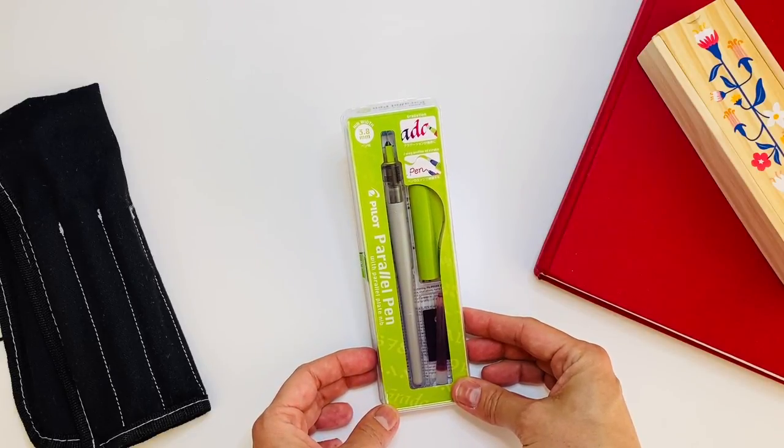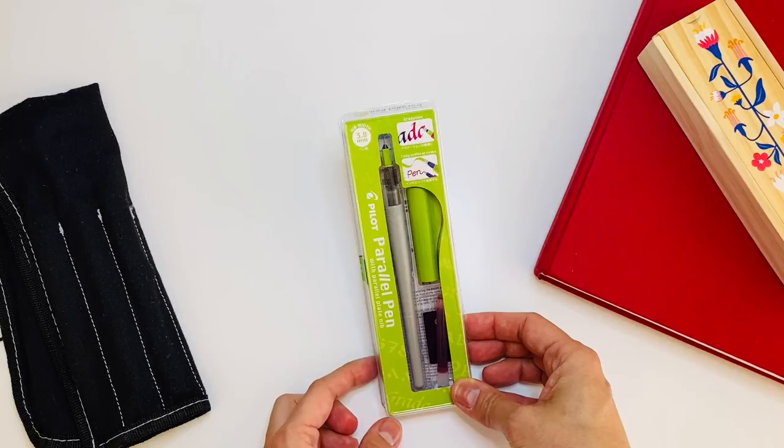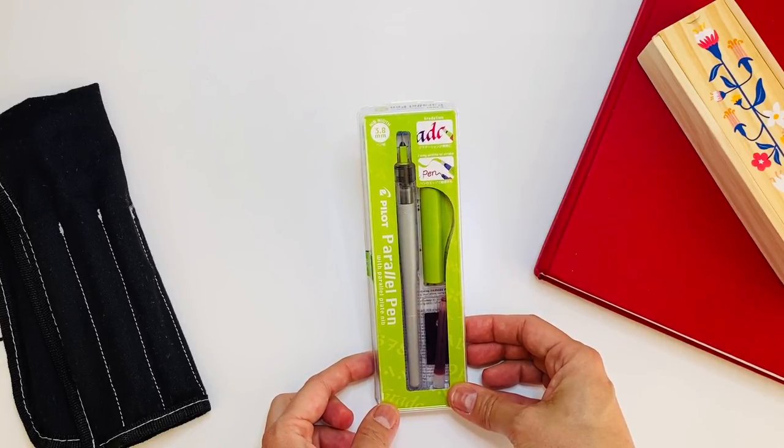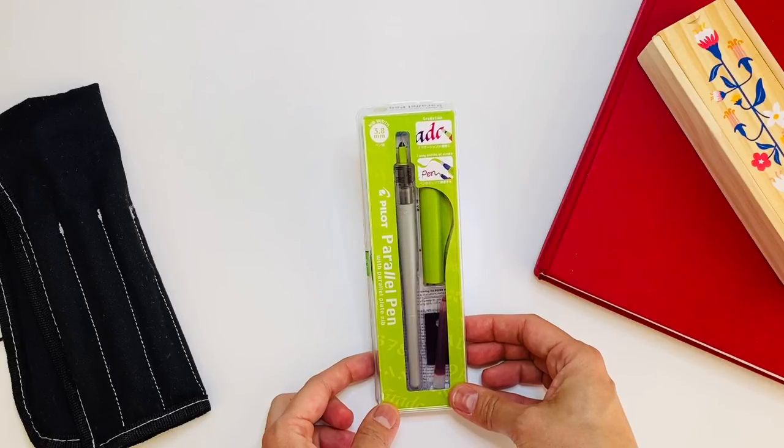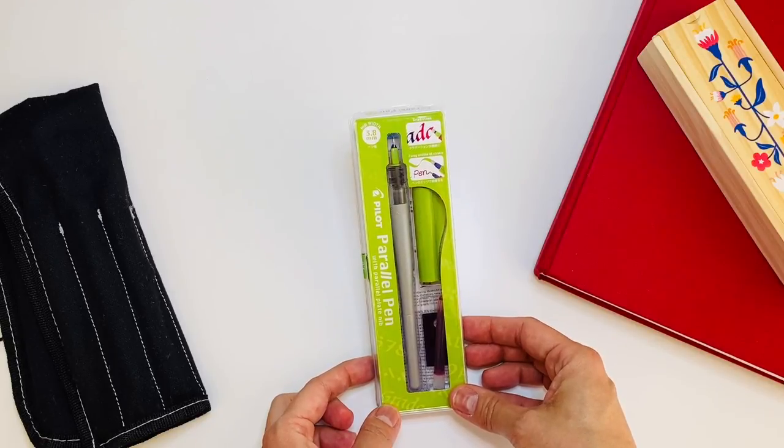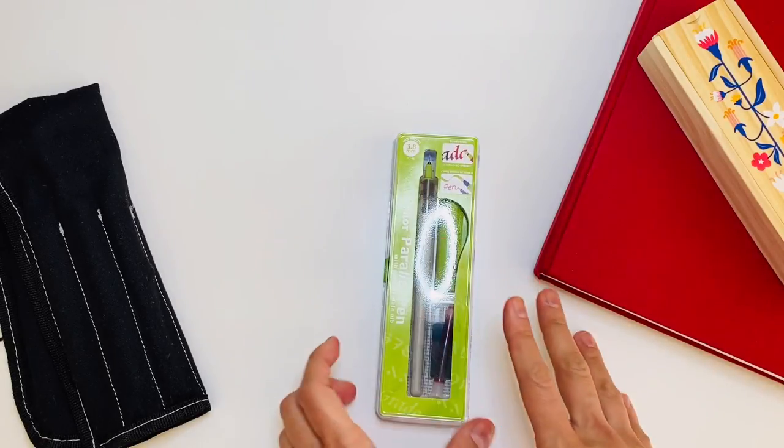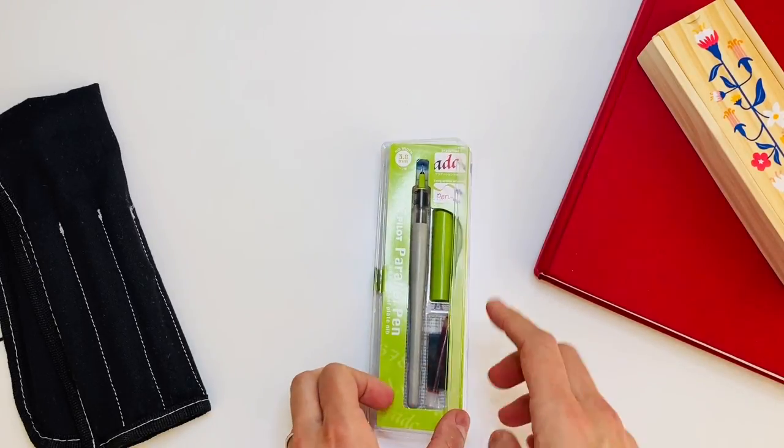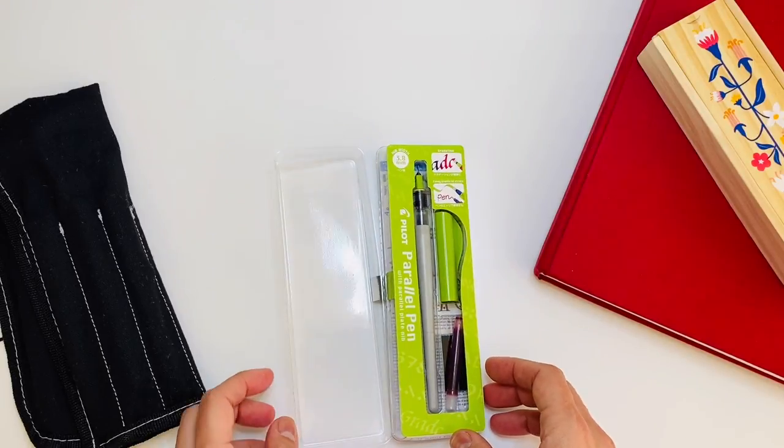They have different size nibs. This is a 3.8 millimeter nib, but they actually have other sizes up to six millimeters and smaller. So you can actually get a set of four with all the sizes for like 25 dollars or something, and it would actually turn out to be a lot cheaper than buying them separately.